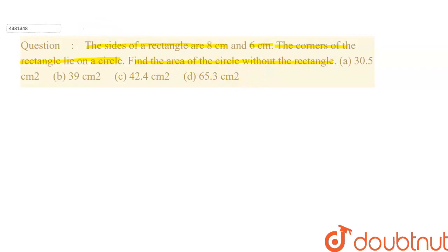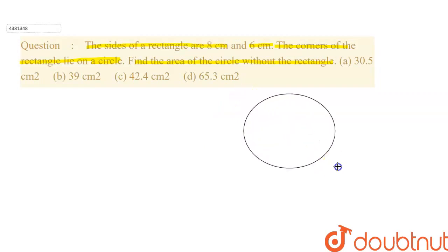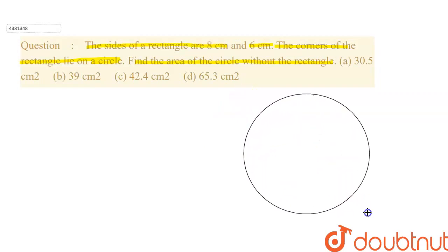So, in the question, we have a rectangle given which is 8 cm and 6 cm. The corners of the rectangle lie on a circle. First of all, I will explain with a diagram — there is a circle and the rectangle is inscribed in it.